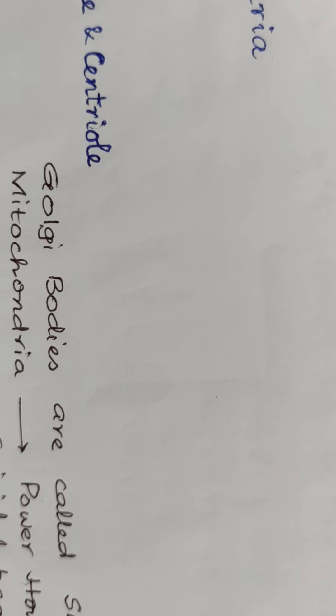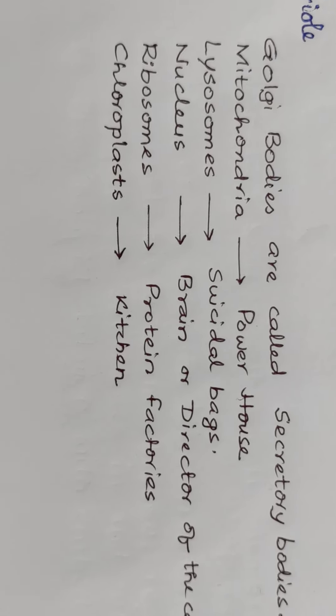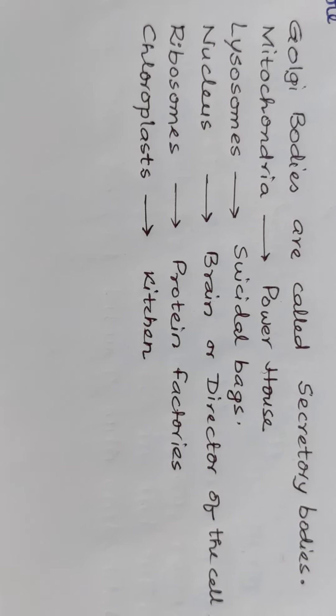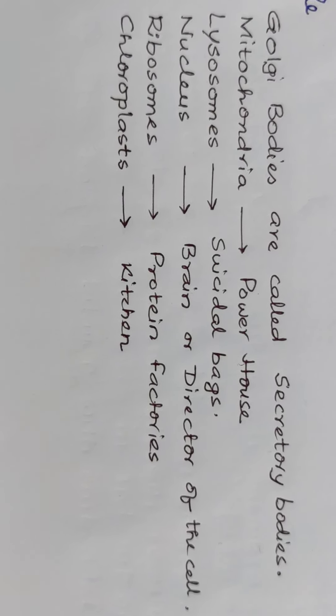Now there are special names given to some of these organelles due to their function. For example, Golgi bodies are also called secretory bodies because they secrete all kinds of substances in a cell.